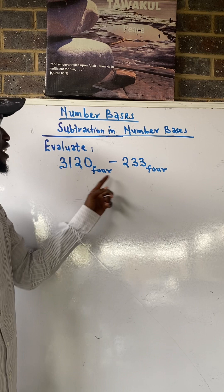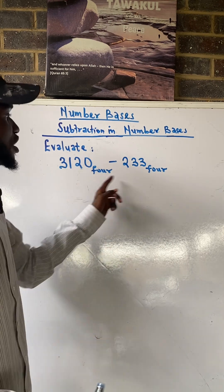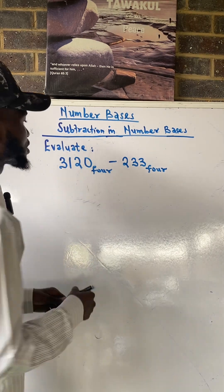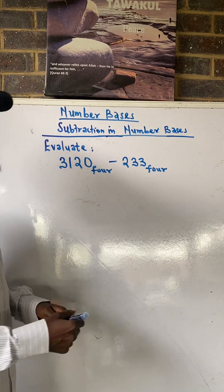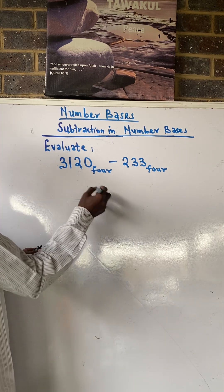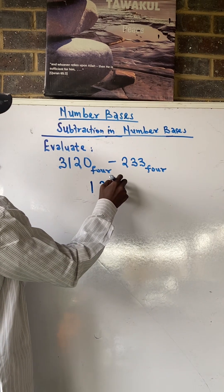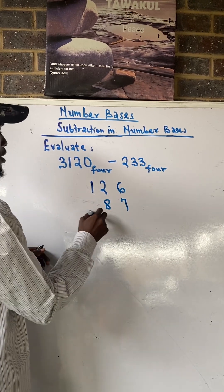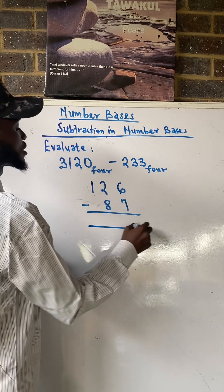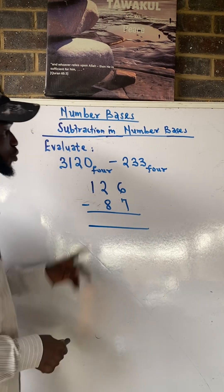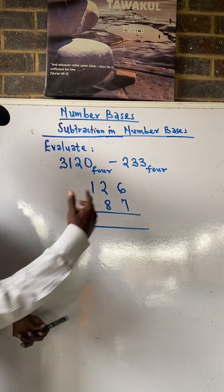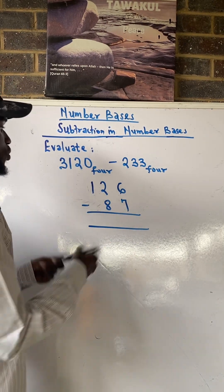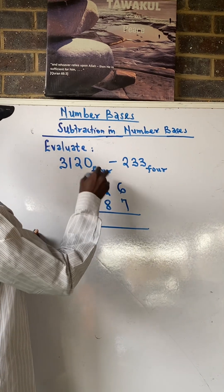But before we deal with this, let's look at our basic mathematics. Let's see what it taught us in primary school, elementary school. If we have 126 minus 87, how do we always subtract this? In primary school they will say six minus seven, they will say impossible, so we will have to come and borrow from here.